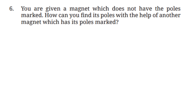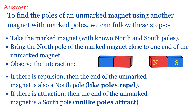Question 6: To find the poles of an unmarked magnet using another magnet with marked poles, take the marked magnet with known north and south poles and bring its north pole close to one end of the unmarked magnet. If there is repulsion, that end of the unmarked magnet is also a north pole, because like poles repel. If there is attraction, that end is a south pole, because unlike poles attract.